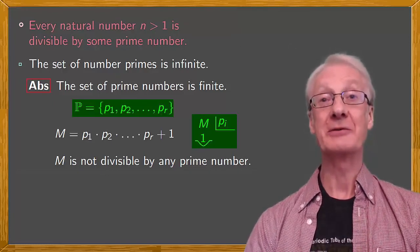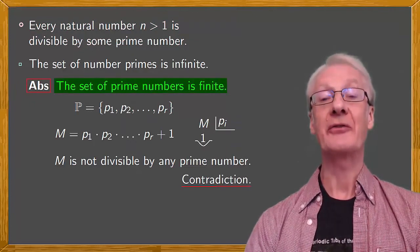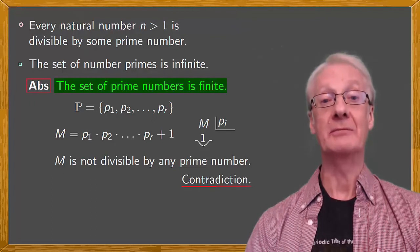So we've run into a contradiction. A contradiction to the assumption that there's a finite number of prime numbers.